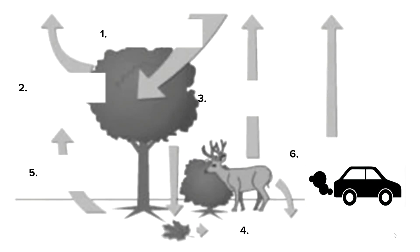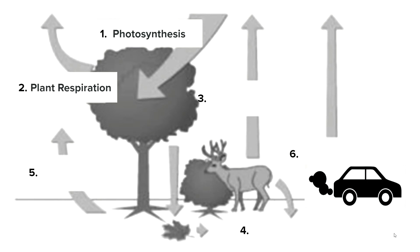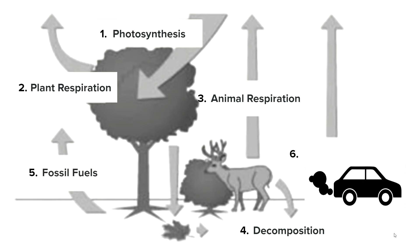The number five arrow comes from the atmosphere and goes into the tree — this is photosynthesis. The number two arrow goes from the plant back to the atmosphere — this is plant respiration. The number three arrow goes from the deer to the atmosphere — this is animal respiration. The number four arrow goes from the deer and the tree into the ground — this is decomposition. Number five shows the decomposed waste that has been in the ground for a very long time — this is fossil fuels. Number six arrow comes from the car as it burns those fossil fuels — that's combustion.